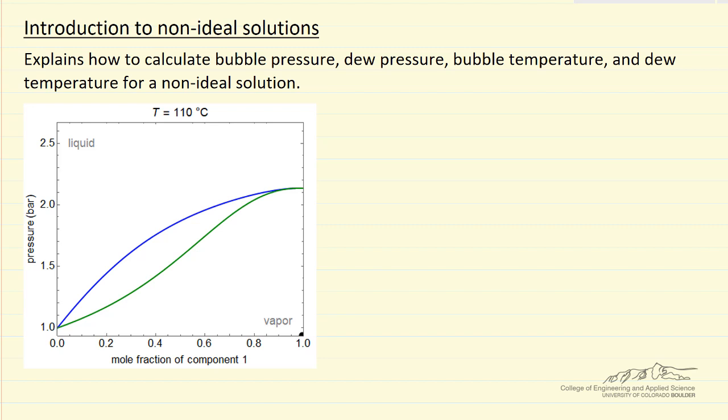Here we're going to look at how to calculate bubble and dew pressures and bubble and dew temperatures. We have a non-ideal solution, so I presented a pressure mole fraction diagram that can be modeled by the modified Raoult's law, which is the mole fraction of component one in the liquid phase times the activity coefficient times the saturation pressure. Component one equals mole fraction component one times pressure, the total pressure, and then we have an equivalent equation for component two.